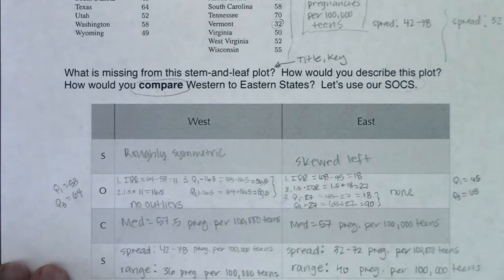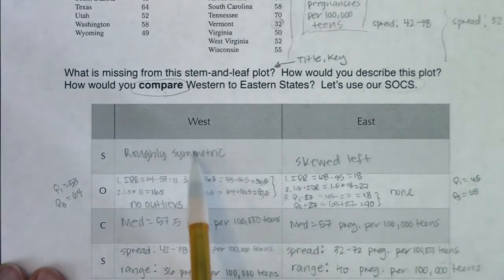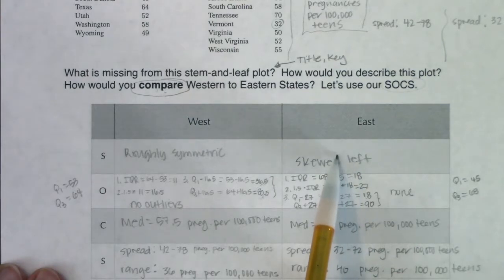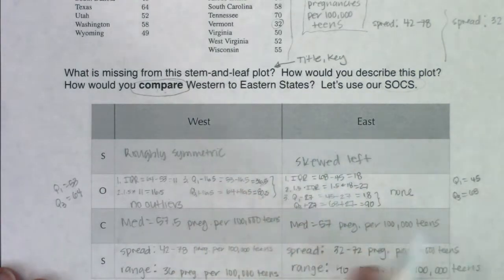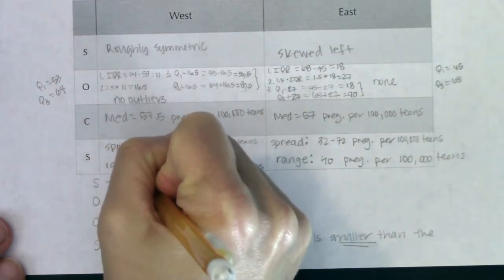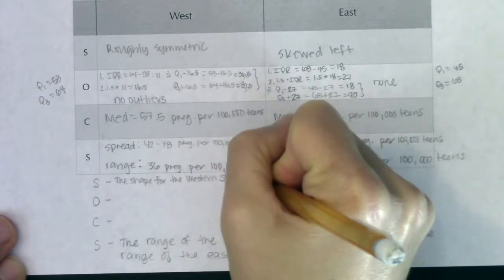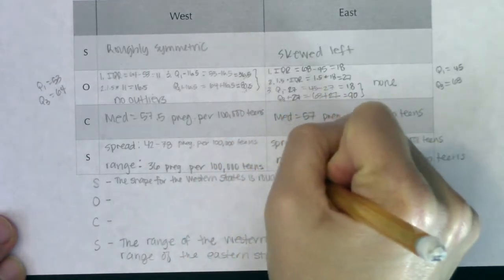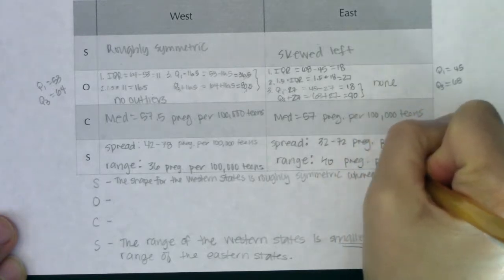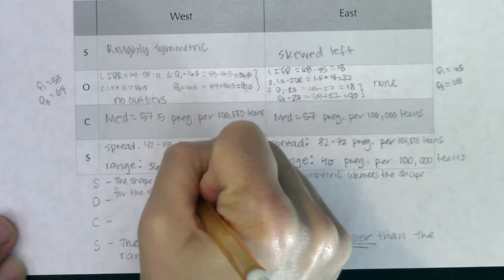You might think you're done — you're not. When comparing, you still owe three sentences. The shape for the western states is roughly symmetric, whereas the shape for the eastern states skews left. I want you to use comparative language — specifically the word 'whereas' — so you're putting something in there that compares the two distributions directly.